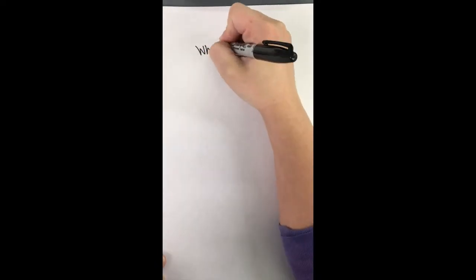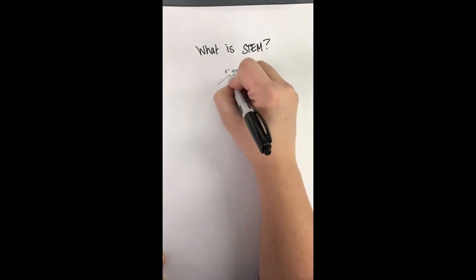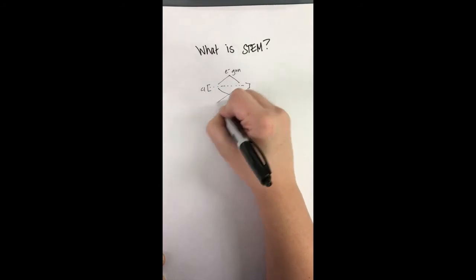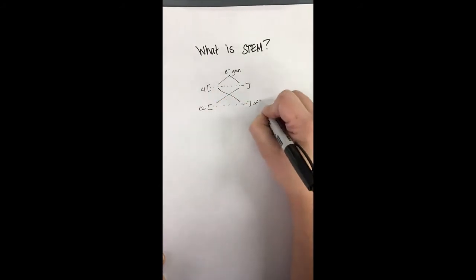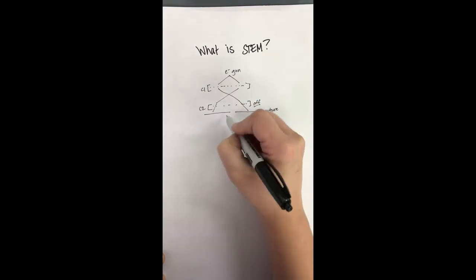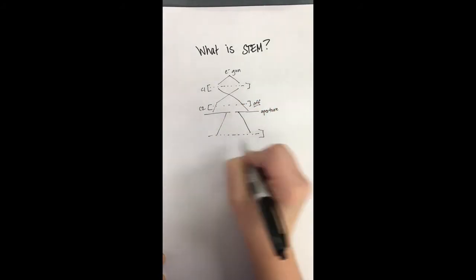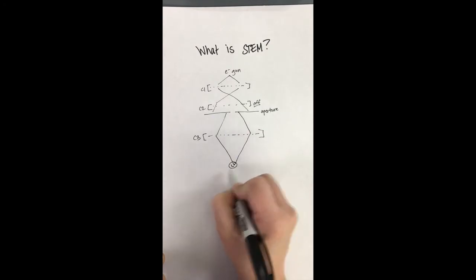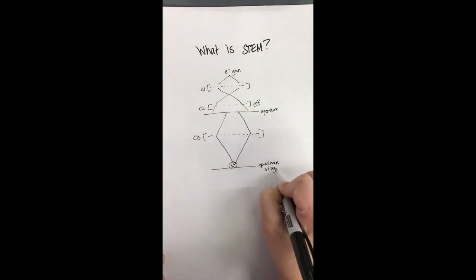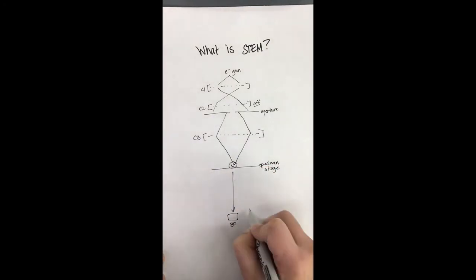This is different than STEM, or scanning transmission electron microscopy, where the electron gun still produces electrons that still move through condenser lenses. However, in this configuration, the second condenser lens is usually switched off and the beam then moves through a third condenser lens. The third condenser lens focuses the electron beam to a single point at the specimen's stage.